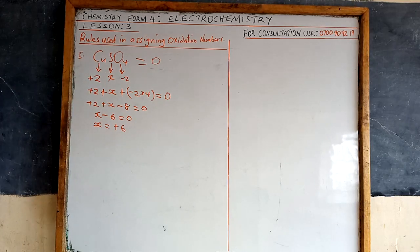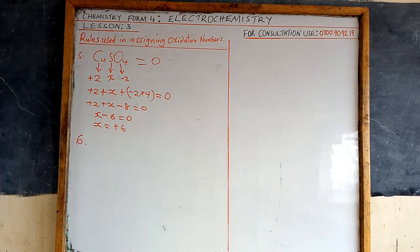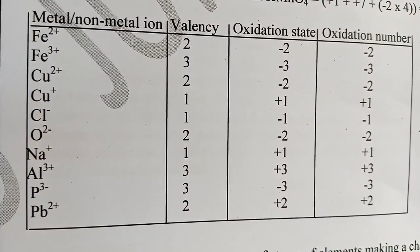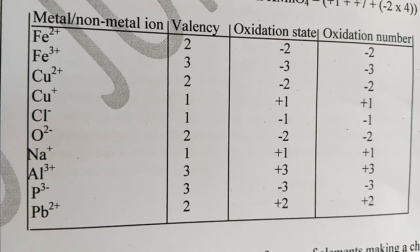That is how rule number five is applied. Now let's consider rule number six. Before discussing it, here is a table of some elements and their oxidation numbers. You can use valences to determine oxidation numbers — for example, iron(II) valence two, iron(III) valence three, copper(II) valence two, copper(I) valence one, chlorine valence one, oxygen valence two, sodium valence one, aluminium valence three, phosphorus valence three, and lead valence two.